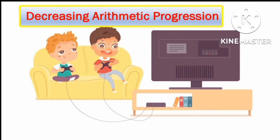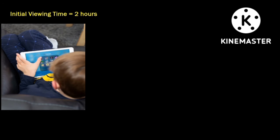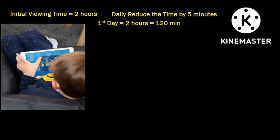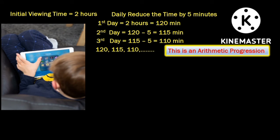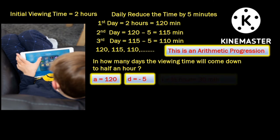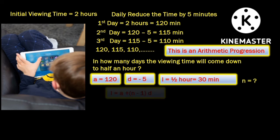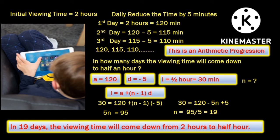Decreasing arithmetic progression can also be very effectively used. Suppose you are daily watching TV or other mobile devices for 2 hours and you decide to reduce your screen time by 5 minutes daily. On the first day you would have watched for 120 minutes, on the second day 115 minutes, on the third day 110 minutes, and so on — a decreasing arithmetic progression. To find in how many days the viewing time will come down to half an hour, substitute the first term A as 120, the common difference D as minus 5, and the last term L as 30 minutes in the formula for the last term of an AP. You will find that the viewing time comes down to half an hour in 19 days.